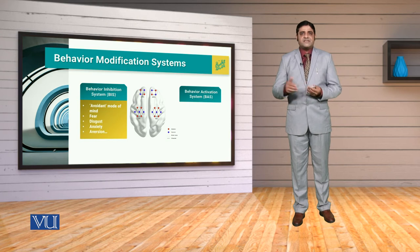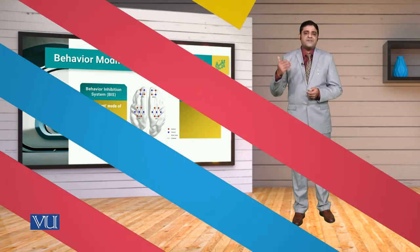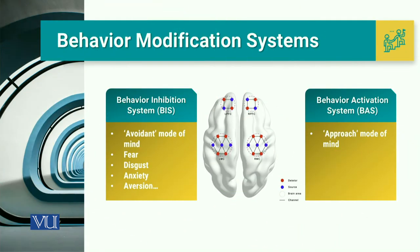The second dimension of the behavior modification system is the Behavior Activation System, commonly abbreviated as BAS. This is the approach side — the approach mode of the mind. In this approach mode, we are focused upon enthusiasm and a sense of pride.